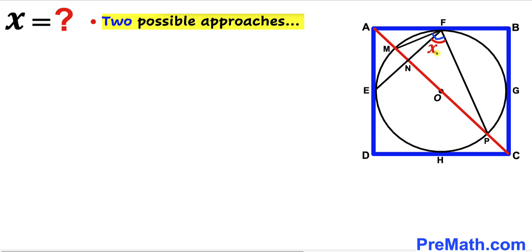We can observe that the whole angle MFP is 90 degrees and angle EFP is our angle X. If we label the remaining small angle as theta, then angle X equals 90 degrees minus theta. Our task in this approach is to find the value of angle theta.